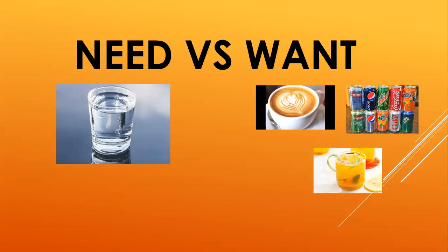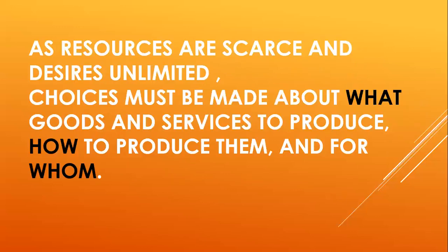So if you decide to go and get the chocolate chip ice cream, you've taken a decision to spend that amount of money on that ice cream. Money is again a resource you have. You've decided to use a little bit of that resource to get satisfaction out of that ice cream. We are constantly making decisions between our wants, but we do forget what we actually need. As resources are scarce and desires unlimited, choices must be made about what goods and services to produce, how to produce them, and for whom to produce them.